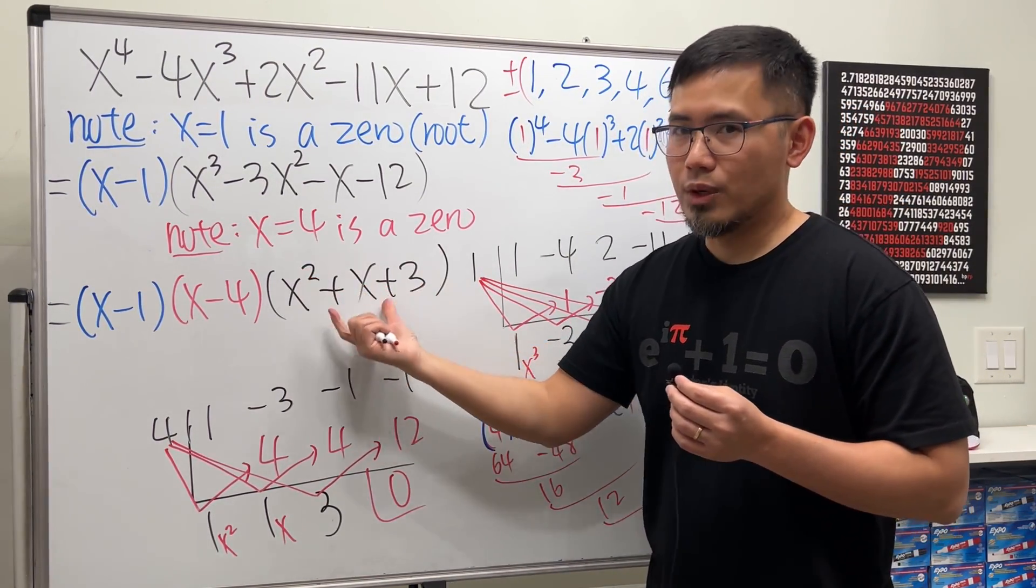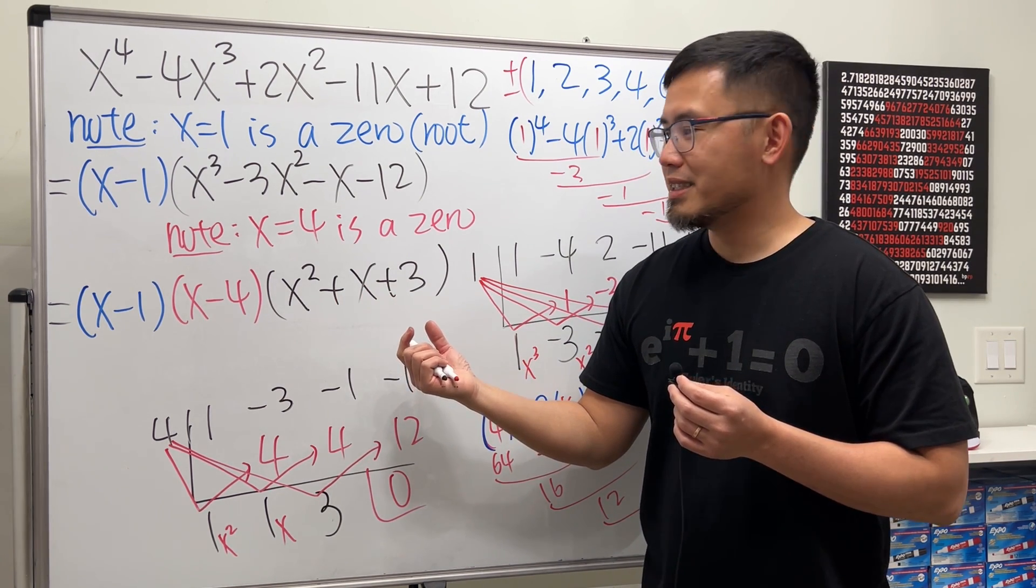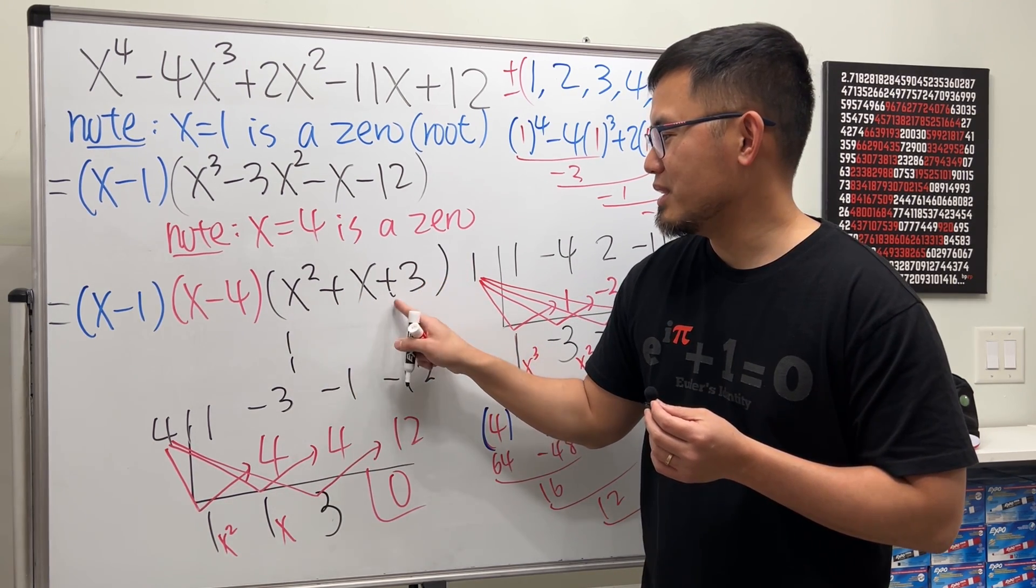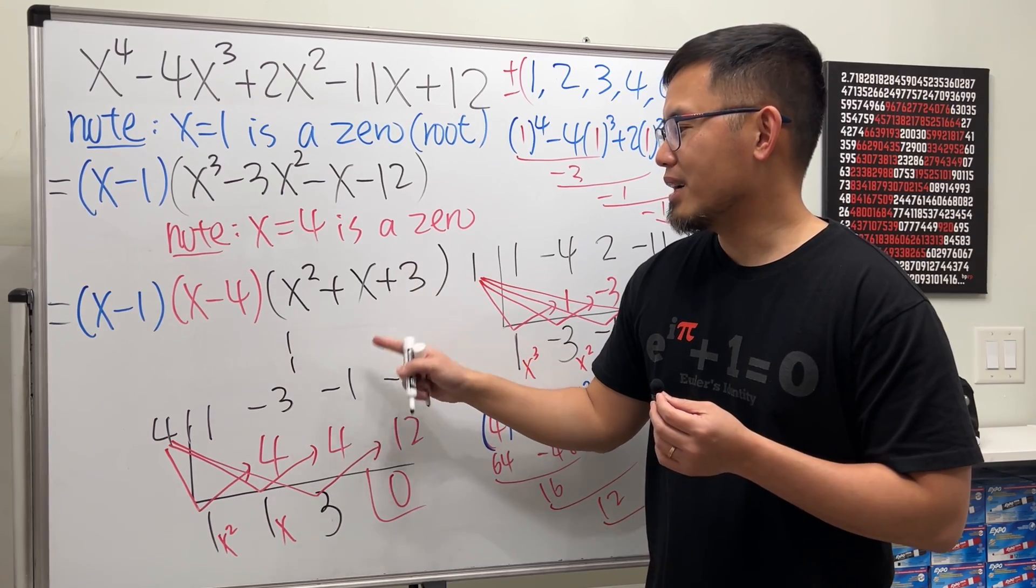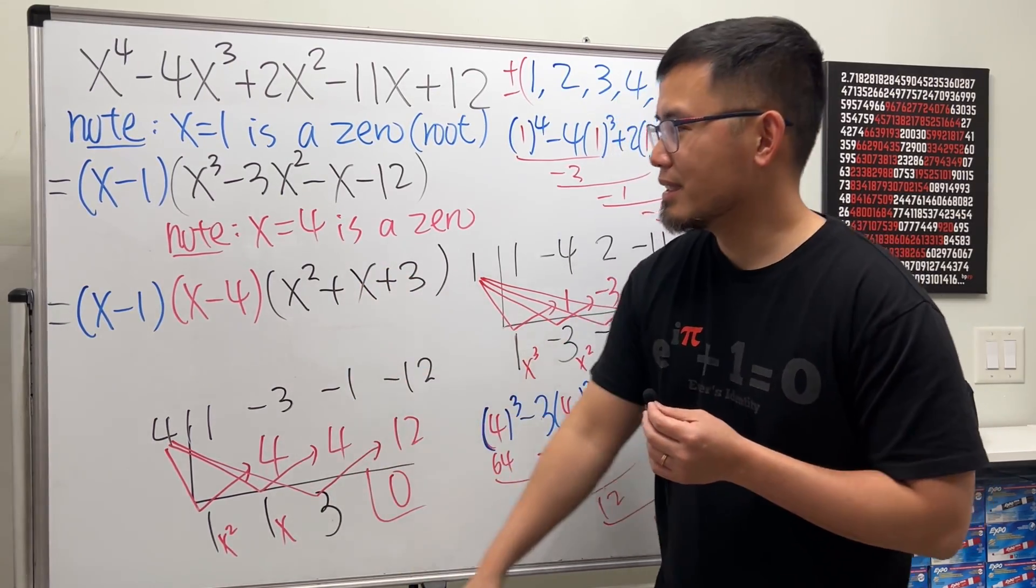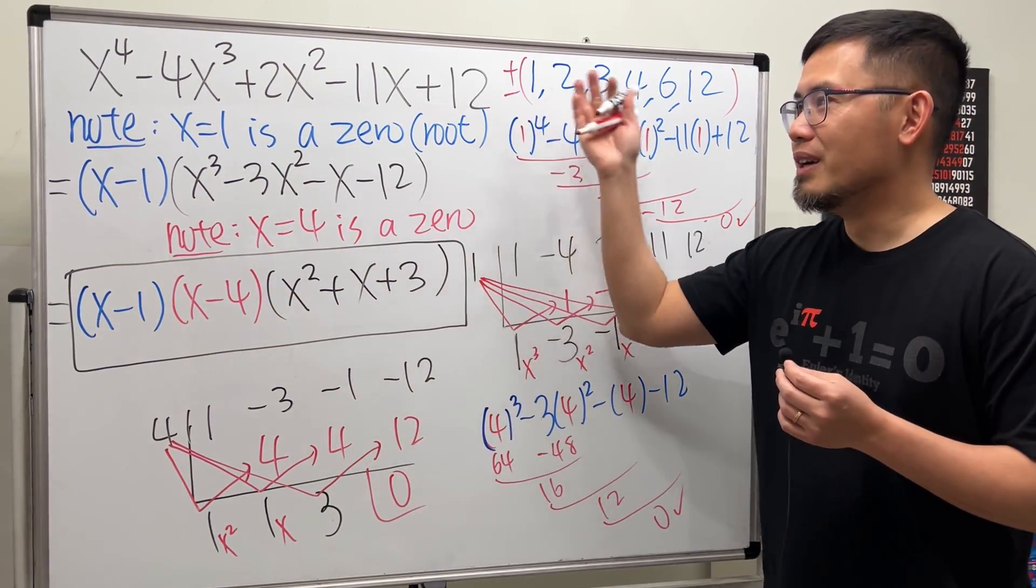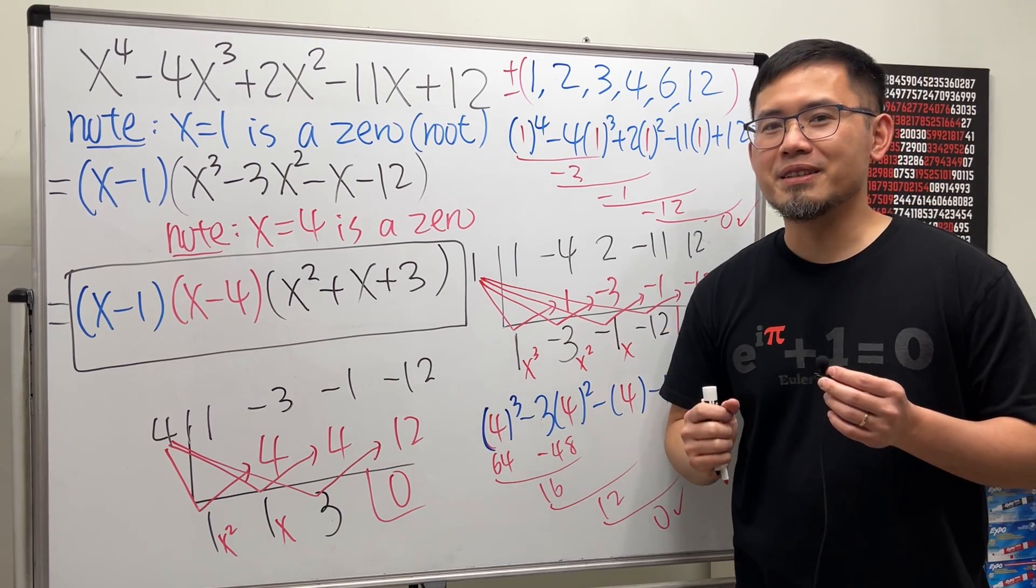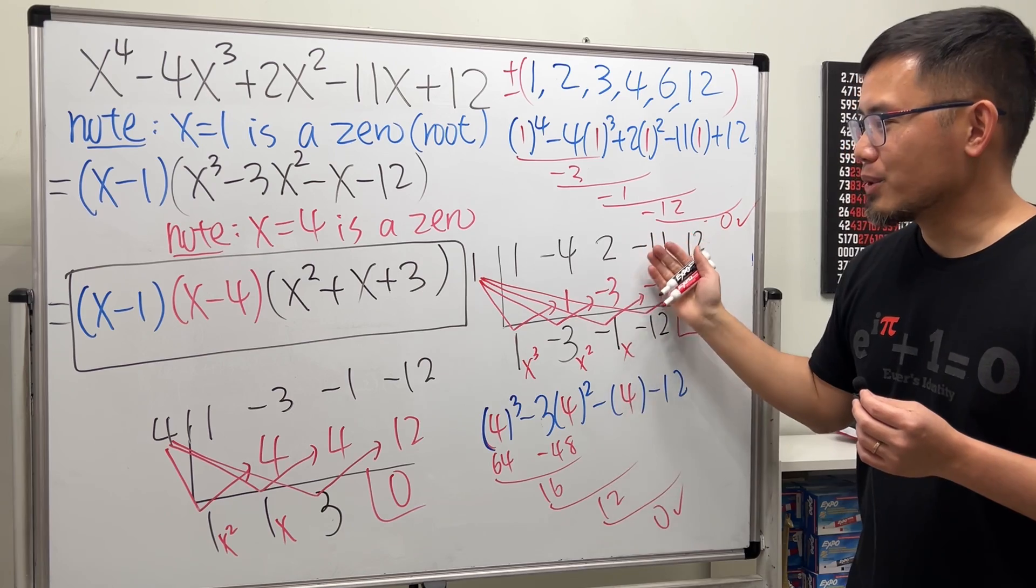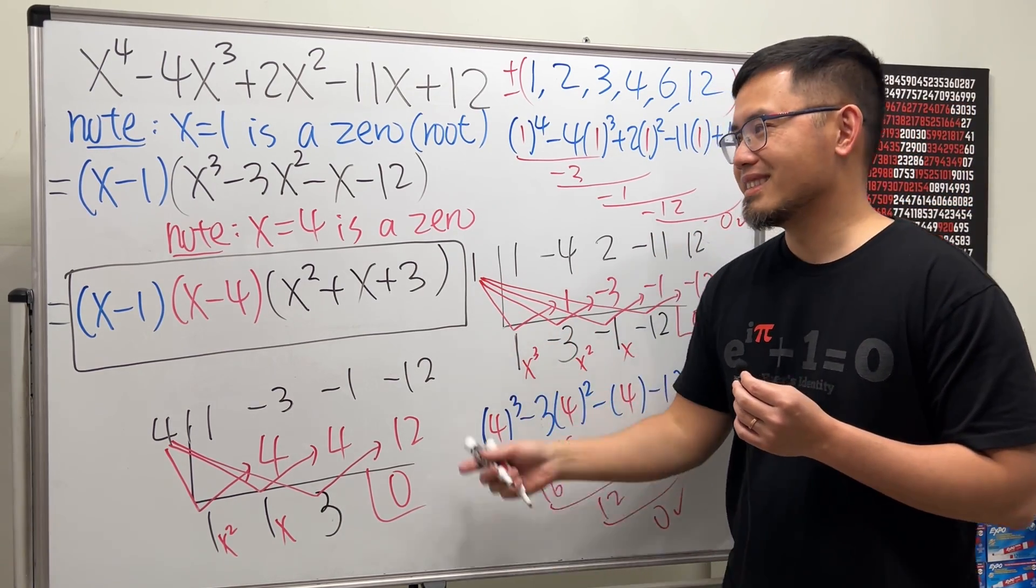Right, because this is just 1 and 1, and then 3 and 3... 3 and negative 1, no matter what you do, this is not factorable. In that case we know this right here is it, just like that. So this is just one way of factoring a five-term polynomial by using the rational zero theorem and also synthetic division. Check out my next video because I'll show you guys a different method.